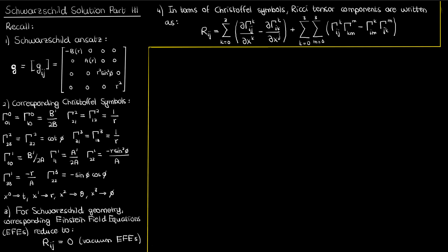Now that we've got everything in place, let's complete our solution to the Einstein field equations for the static, spherically symmetric mass to end up with our Schwarzschild solution. But let's recap what we've got so far.